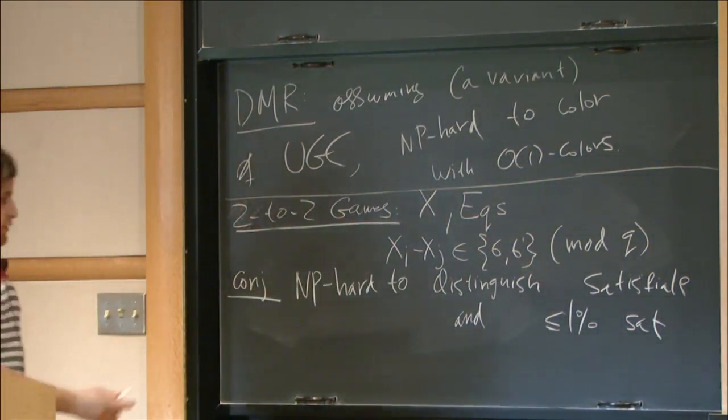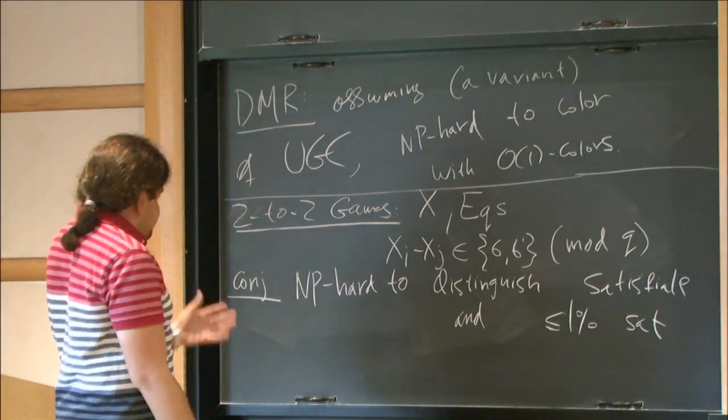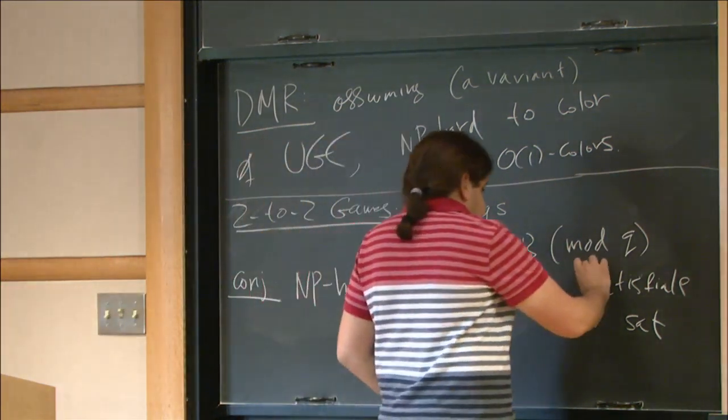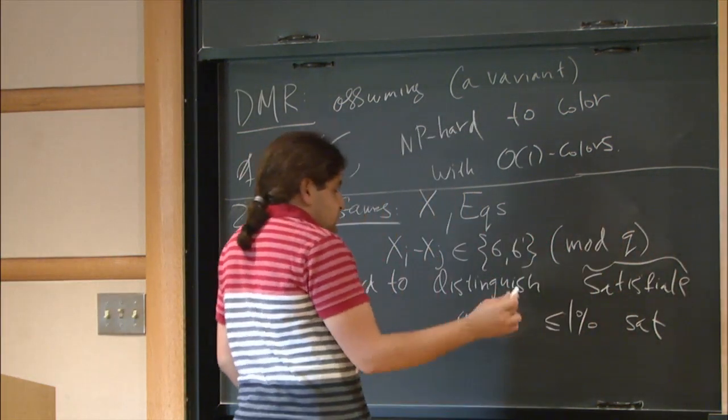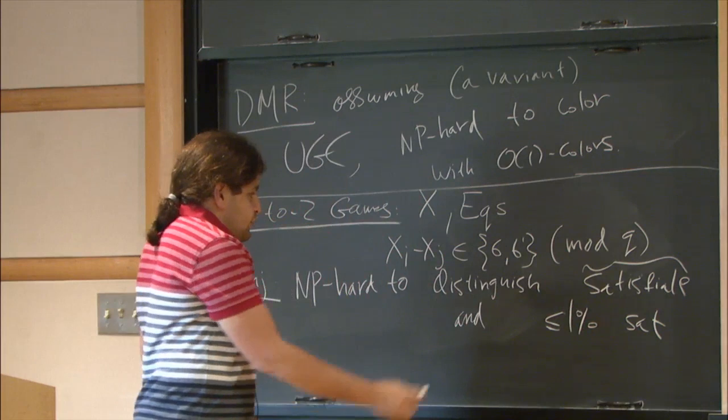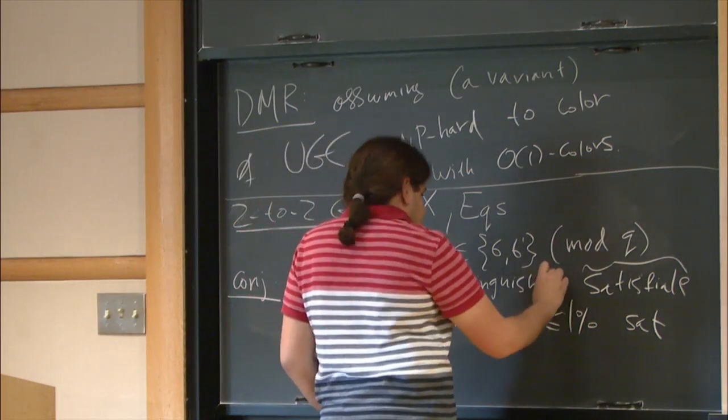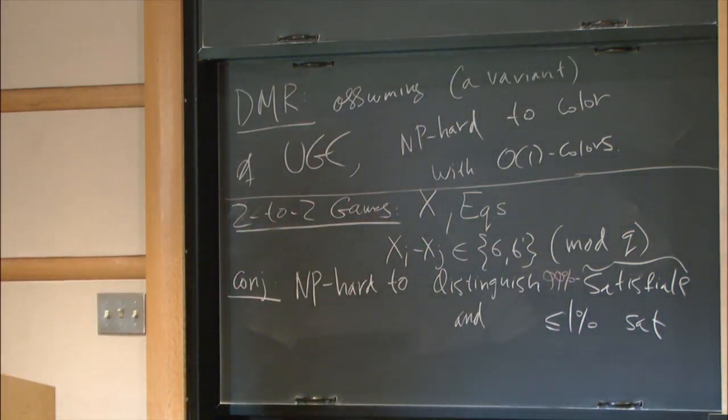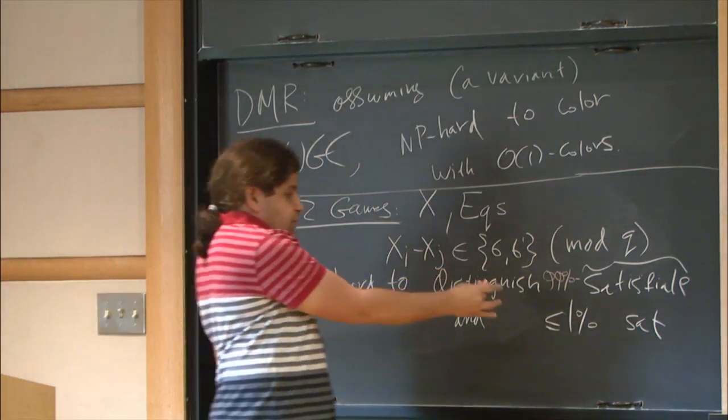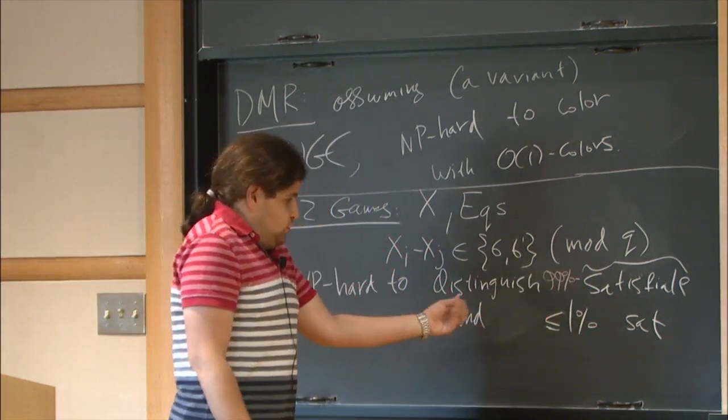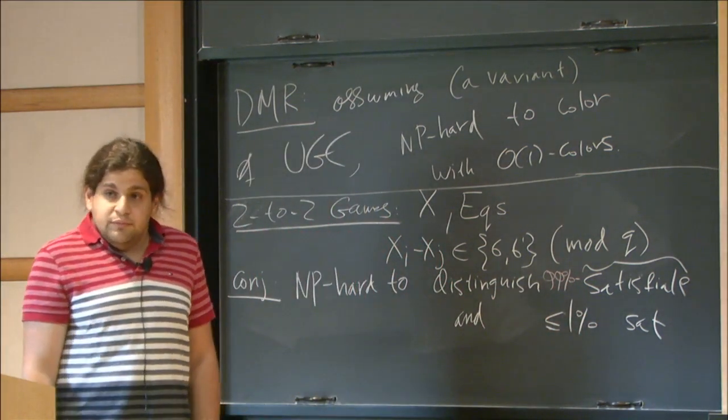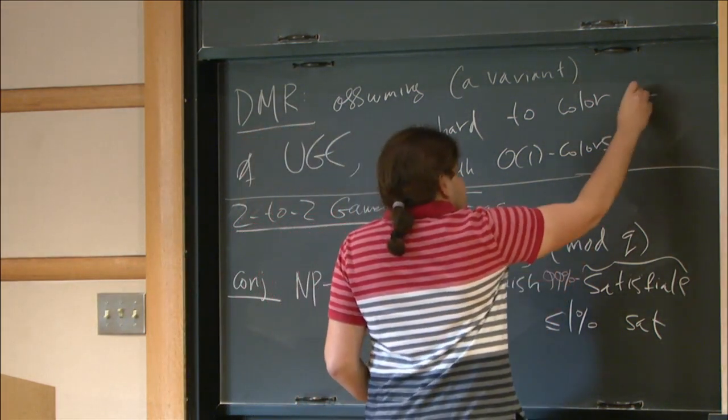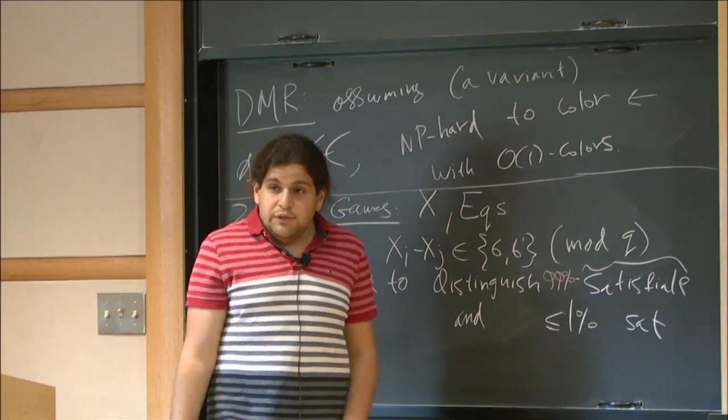Conjecture. And the last thing that I'd like to say is that this conjecture is by now almost a theorem. So recently, we were involved in proving that this conjecture is true if you are willing to put here 99%. So distinguish it between something that is almost satisfiable and nowhere near satisfiable, this is NP-hard. But for this theorem, you really need the full satisfiability.